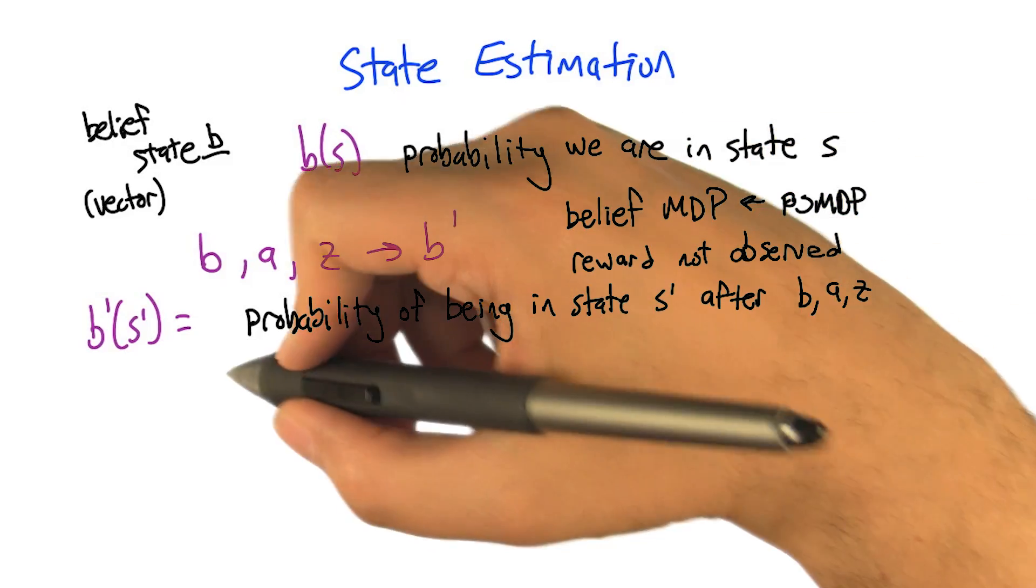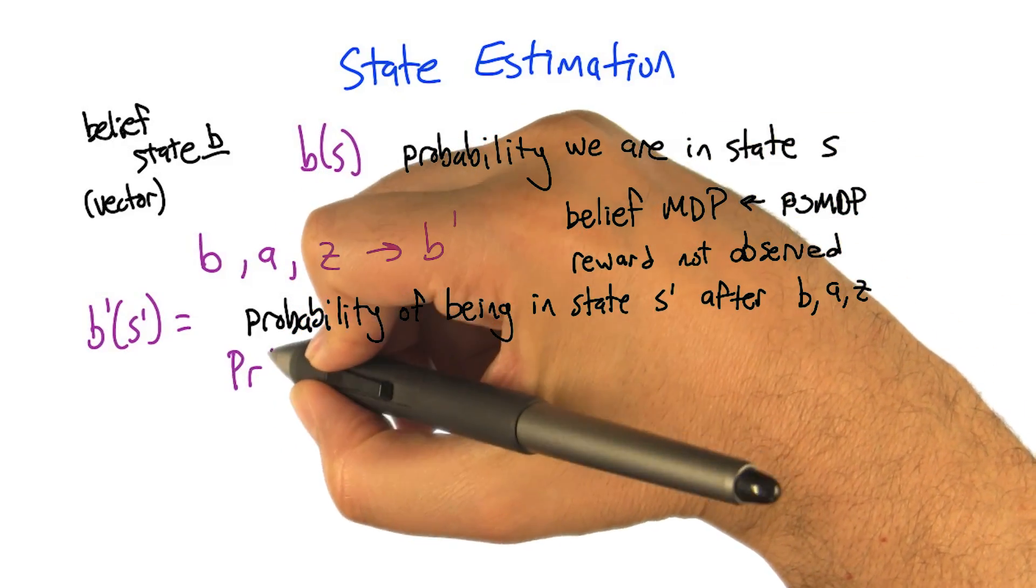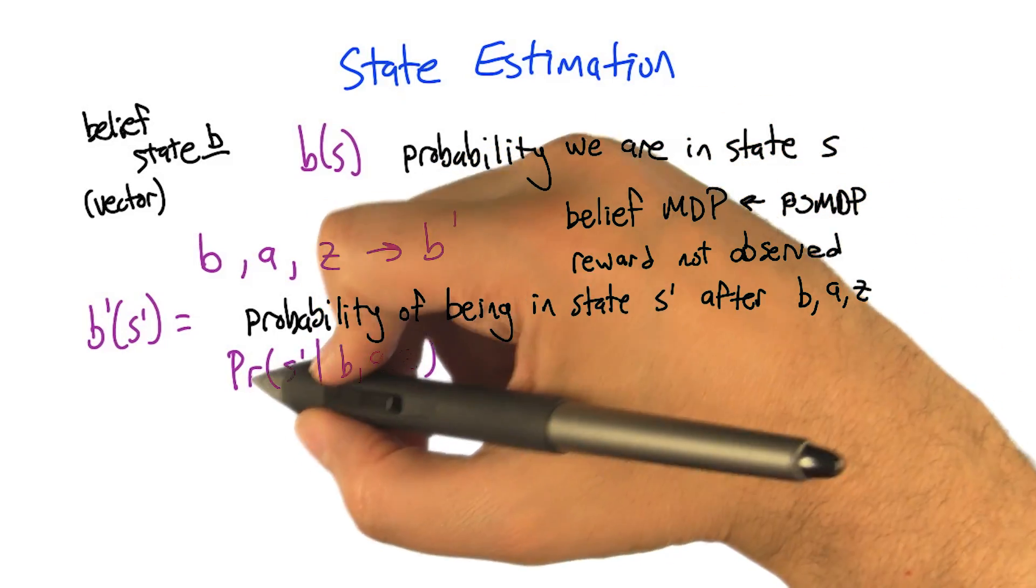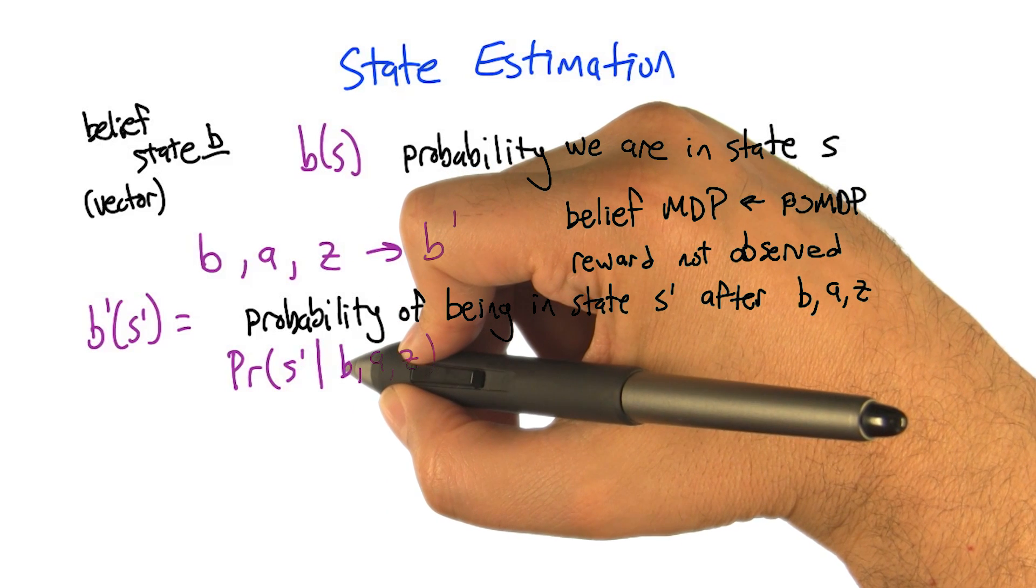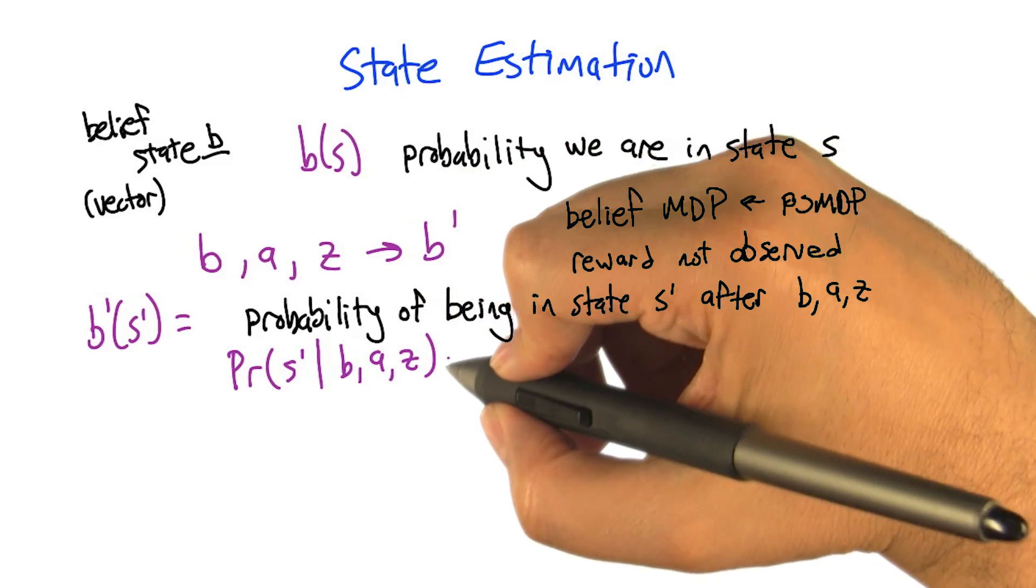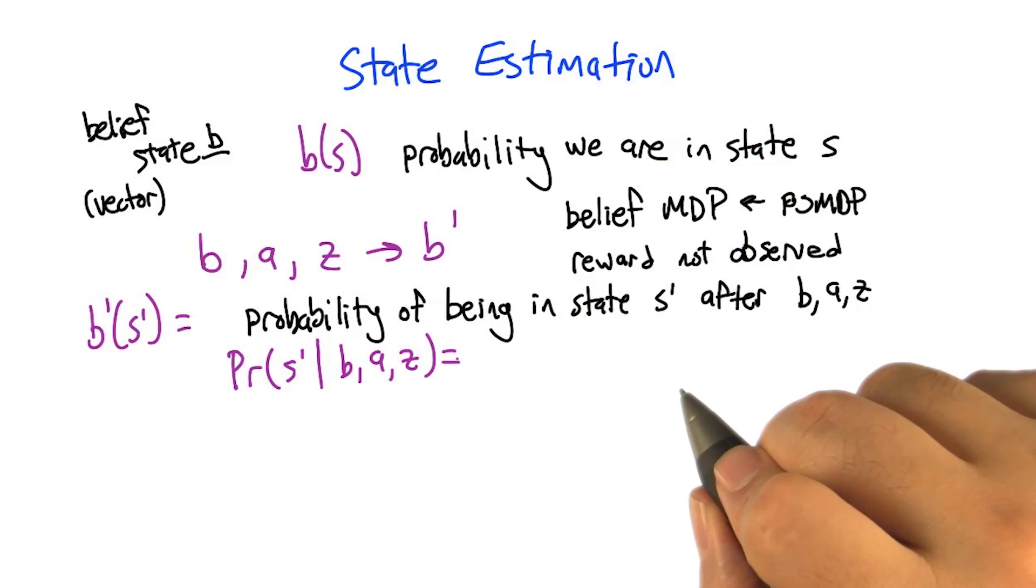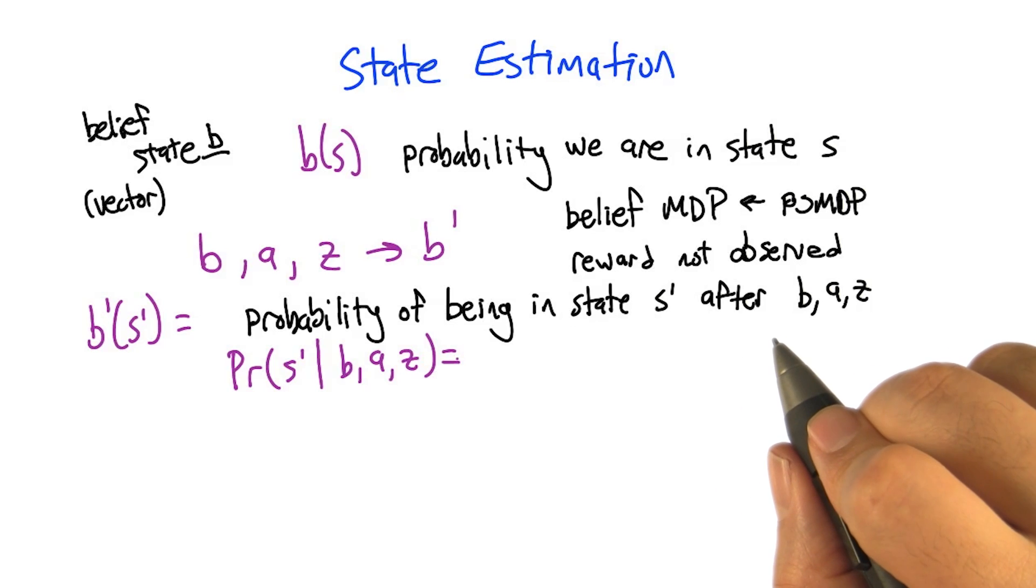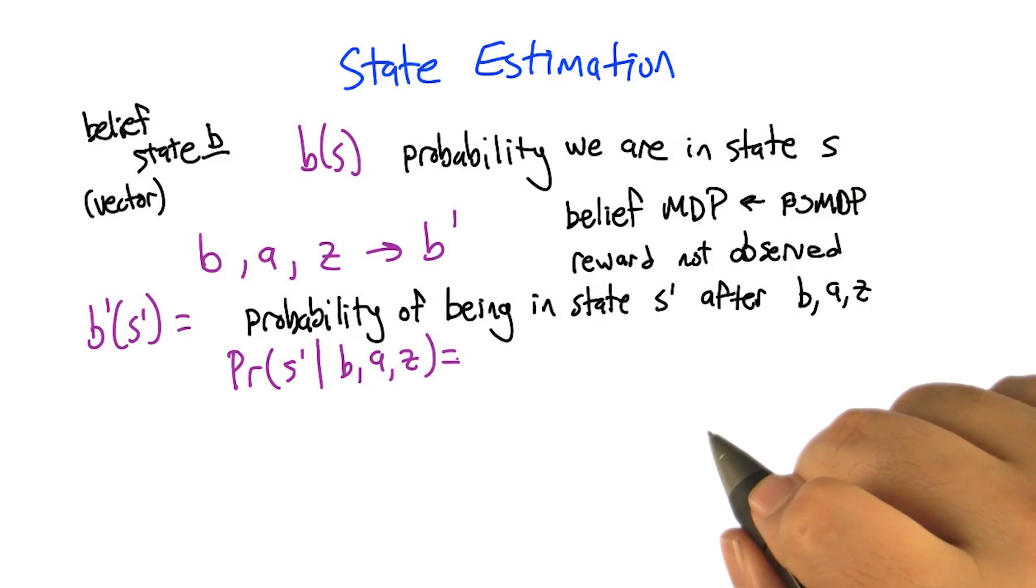Sure, we ought to be able to do that, right? Because we have all the quantities that we need in the POMDP, I think. Well, that's the hope. So we want the probability of the next state, given that we're in a belief state, took an action, and made an observation. So can we manipulate this expression using the laws of probability to make sense out of it? Sure. That's a good answer.